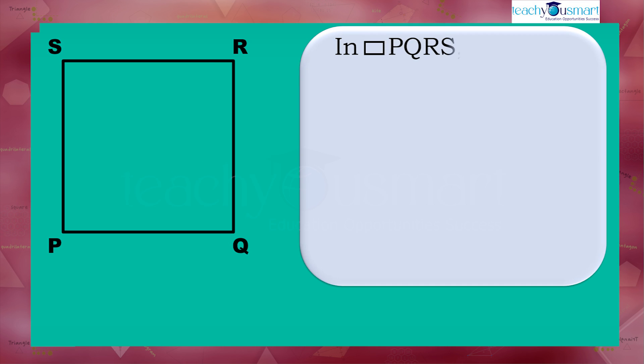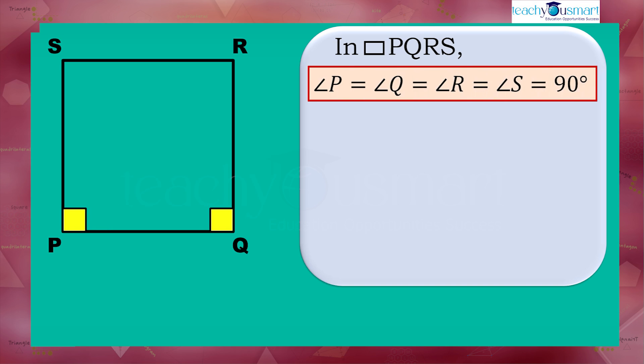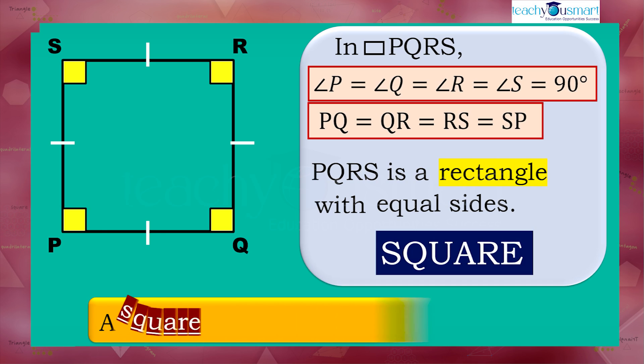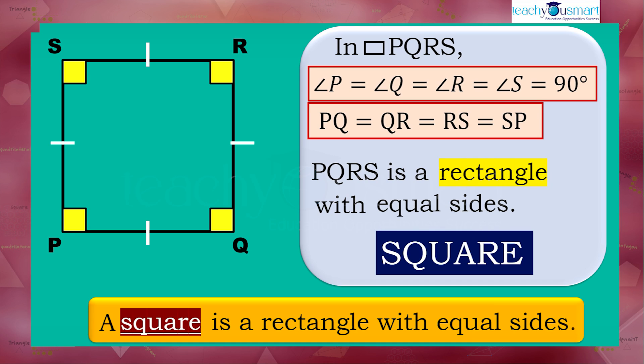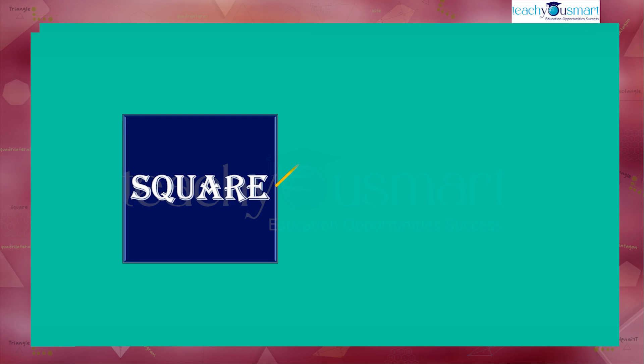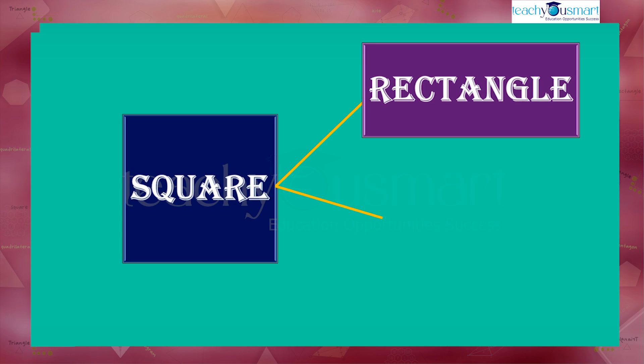In rectangle PQRS, angle P equals angle Q equals angle R equals angle S equals 90 degrees, and PQ equals QR equals RS equals SP. That is, PQRS is a rectangle with equal sides. These types of parallelograms are called squares. That is, a square is a rectangle with equal sides. Since all sides of a square are equal, it is also a rhombus. So a square has all the properties of a rectangle and also that of a rhombus.